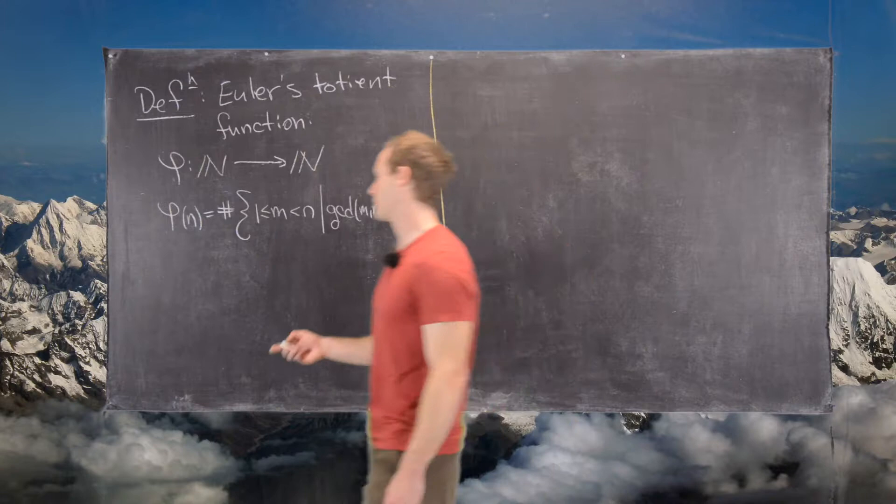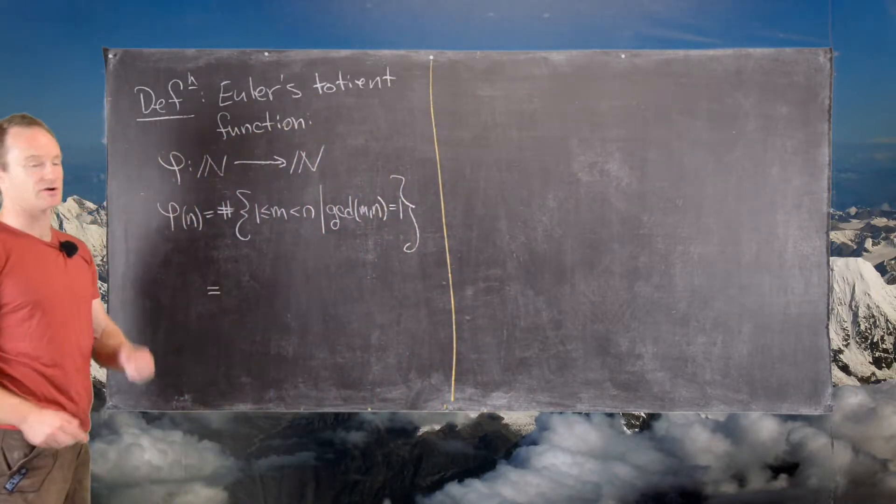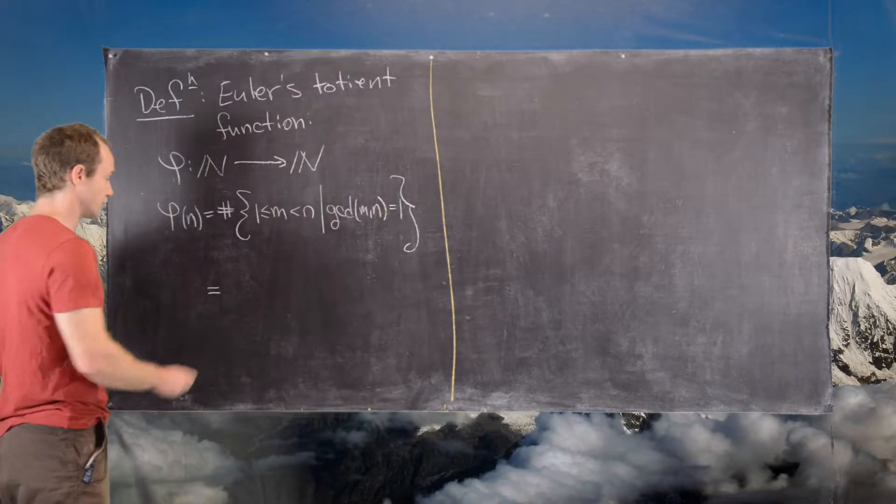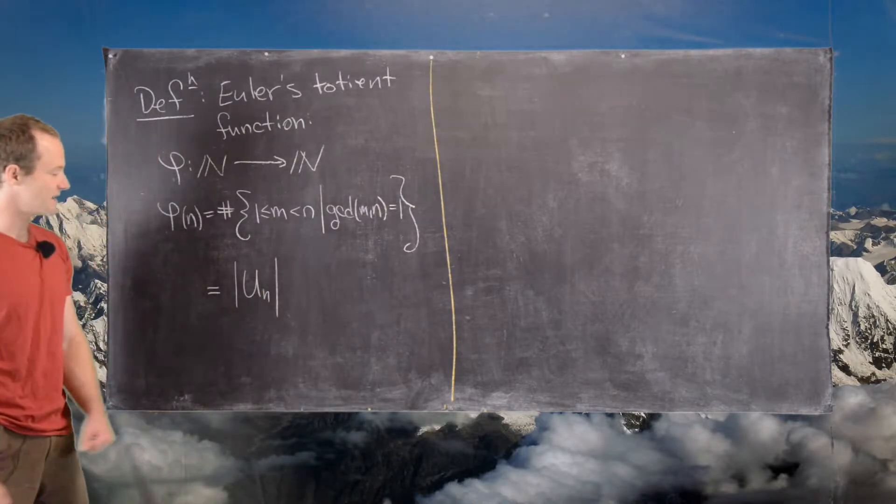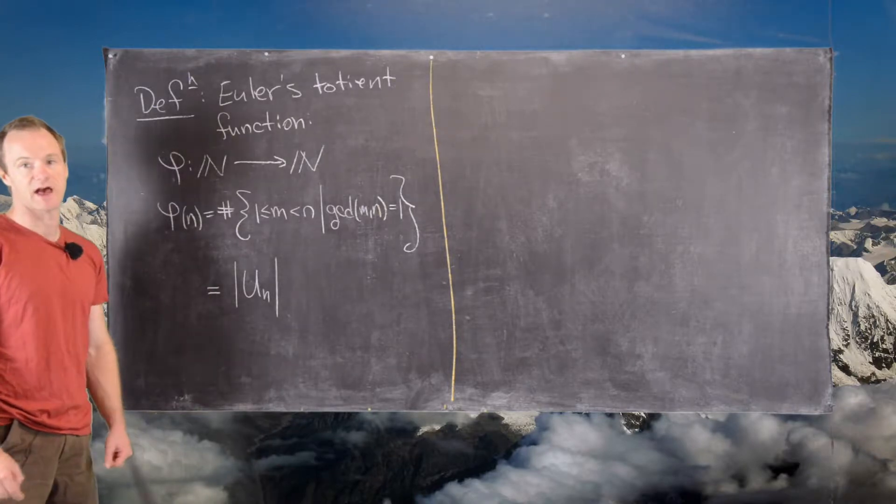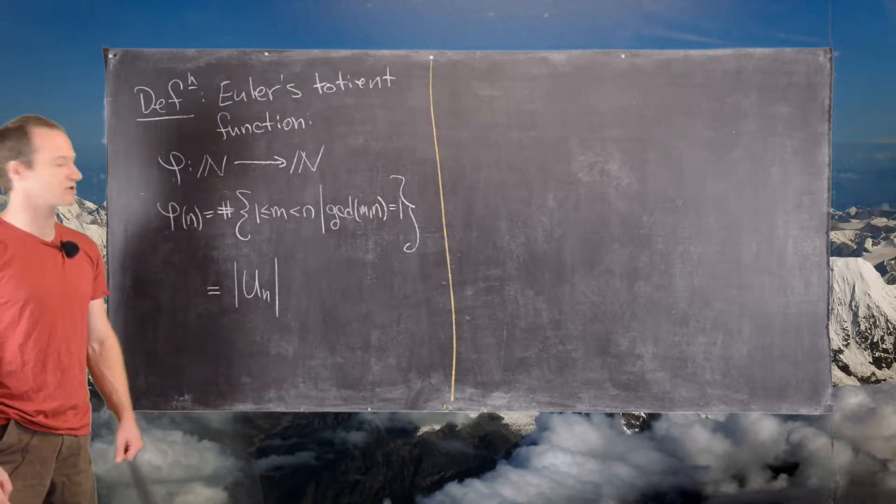So if you noticed from a previous video when we looked at the group of units modulo n, we noticed that the group of units modulo n had exactly these elements in them. So this is in fact the same as the number of elements in the group of units modulo n.